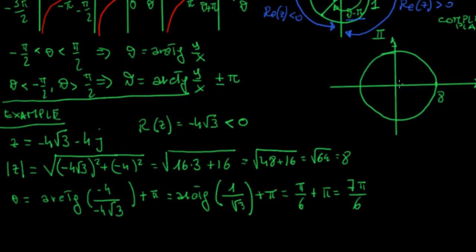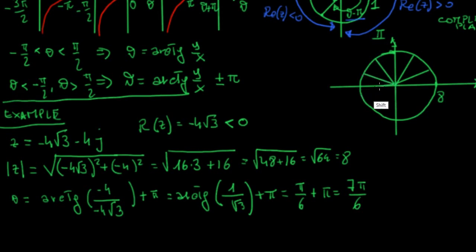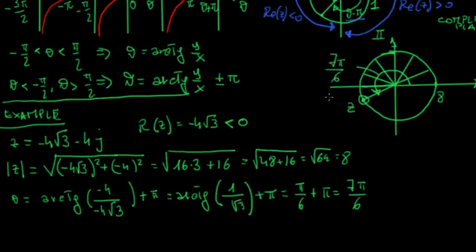Counting around the circle in increments of pi/6 — pi/6, 2pi/6, 3pi/6, 4pi/6, 5pi/6, 6pi/6, and finally 7pi/6 — we locate the point where the complex number z is positioned. So the argument of z is 7pi/6.